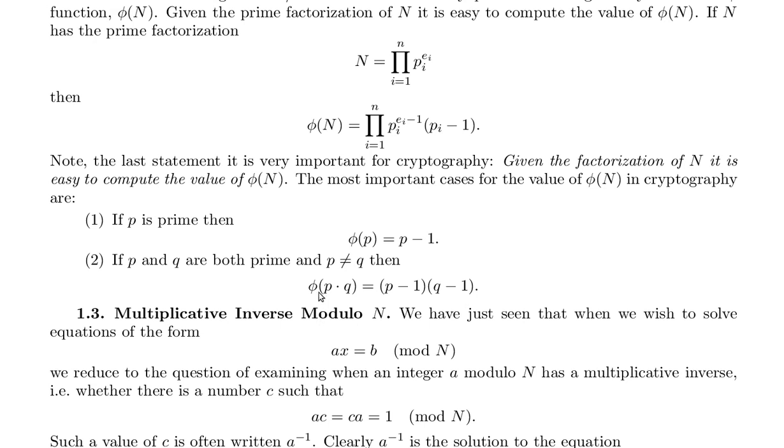So the phi function where p is different from q of p times q equals p minus 1 times q minus 1. In other words, phi of p times q is phi of p times phi of q.